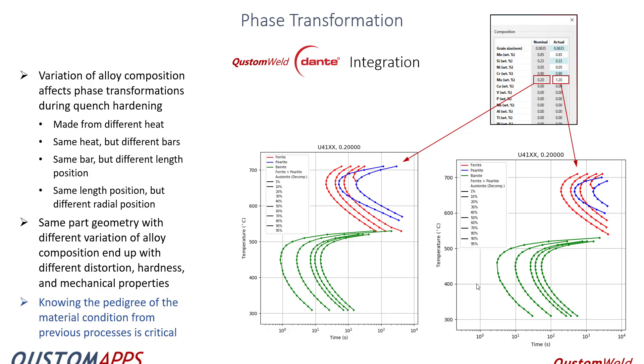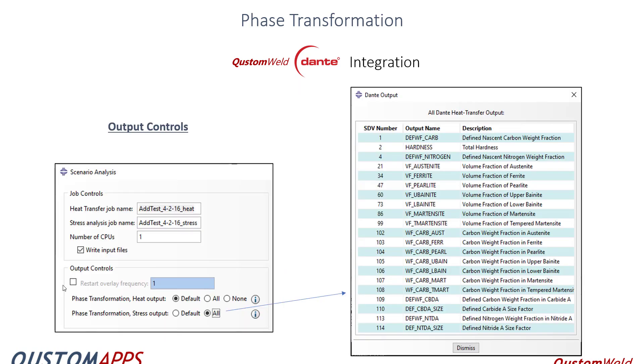So just a quick example of, so here's some of the controls that are made available through custom weld. You know, the composition and your Molly composition. So compared from the nominal 0.2 to 1.2, so you see quite a change in your CCT and TTT curves and all of that stuff is calculated automatically.